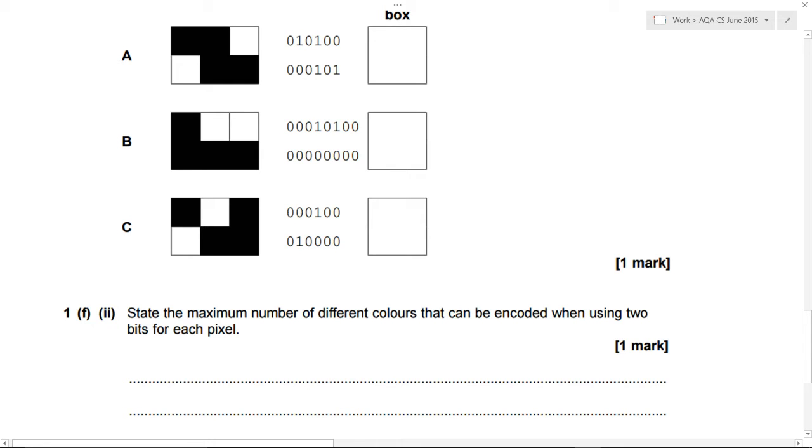But they've used two bits per pixel: zero zero for black, zero one for white. We need to work out what the maximum number of different colors could be, so maybe we'd have a grayscale image.